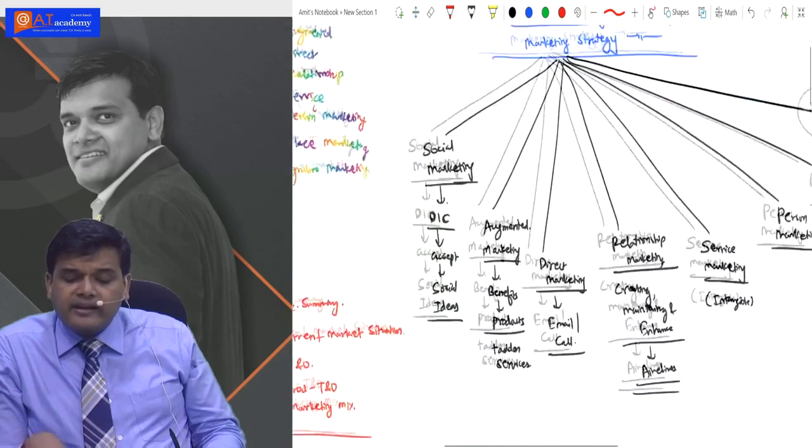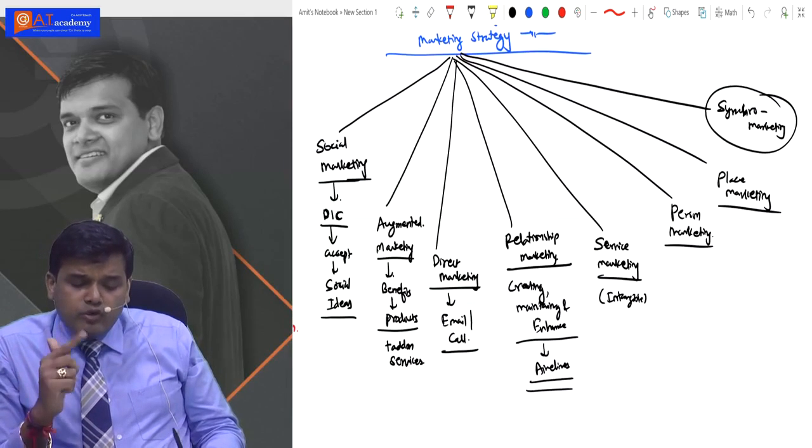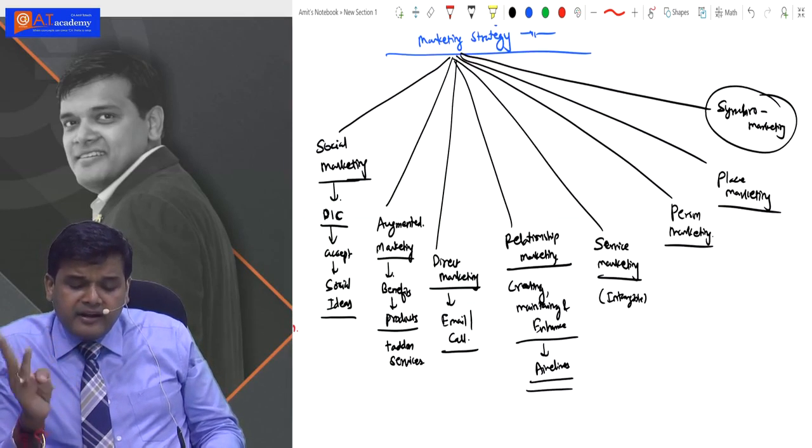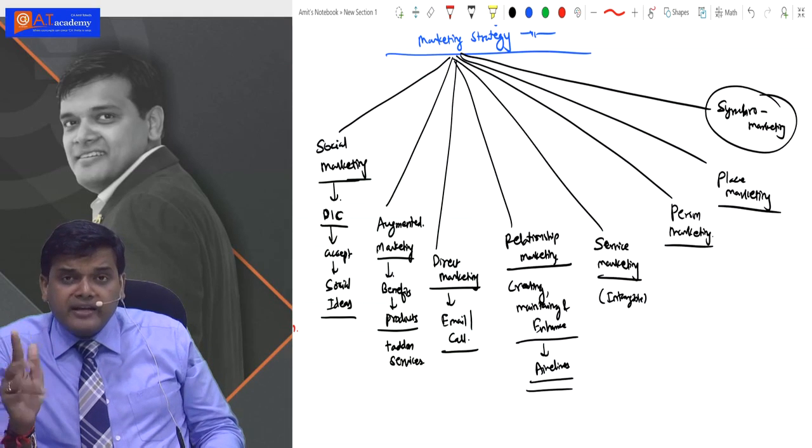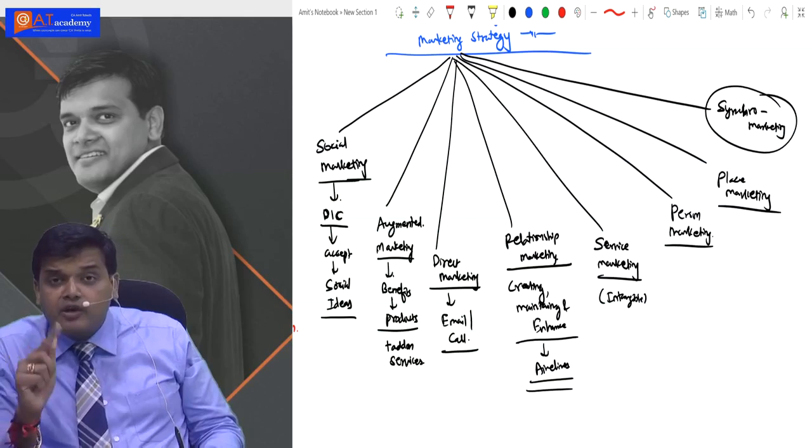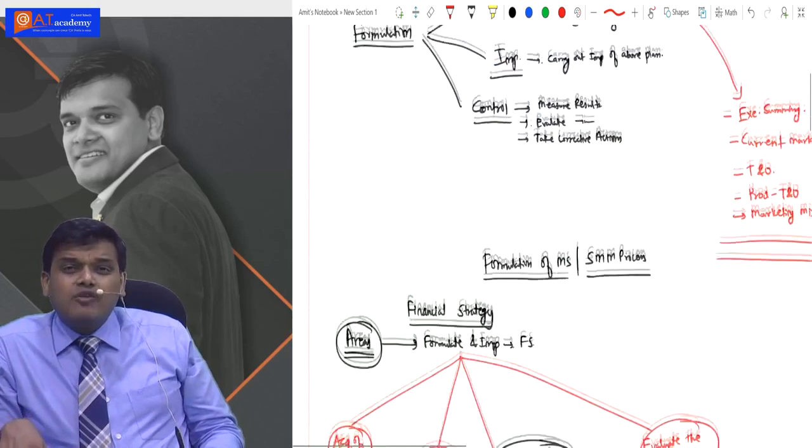Then we saw marketing techniques - there are eight or nine. First is social marketing, second is augmented marketing, third is differential marketing, fourth is relationship marketing, fifth is service marketing, sixth is person marketing, then place marketing, and last is synchro marketing. If you remember, I gave another example called differentiation marketing.